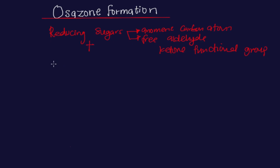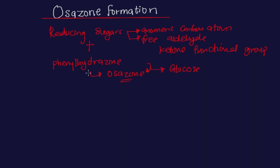The reaction between reducing sugar and phenyl hydrazine gives rise to what is referred to as Osazone. I'm going to show the mechanism behind the formation of Osazone using a reducing sugar like glucose, showing step-by-step reactions that occur. This phenyl hydrazine is actually present in an acidic medium — for example, acetic acid medium — and the reducing sugar and phenyl hydrazine are boiled together to give rise to the formation of Osazone.